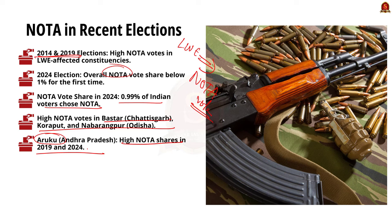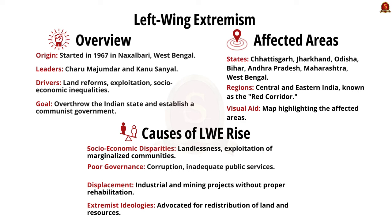Moving further, we shall understand about left-wing extremism in detail. The movement started in 1967 in Naxalbari, a small village in West Bengal, under the leadership of Charu Majumdar and Kanu Sanyal. The movement was driven by issues like land reforms, exploitation, and socio-economic inequalities. The aim of this movement is to overthrow the Indian state through armed rebellion and establish a communist government.